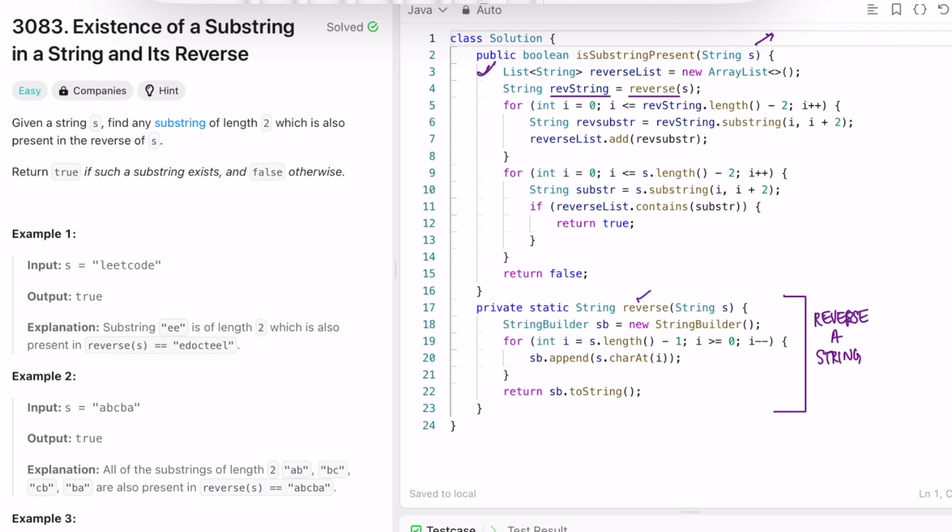Now I'm writing a for loop which will form substrings on the reverse string. It will start from 0 until the length minus 2 index. In each index position I'm taking substrings of length 2 and adding it into the list.